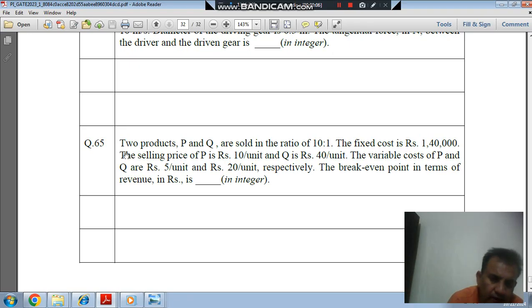Hello, welcome again. We are solving GATE 2023 Production and Industrial Engineering question number 65. Two products P and Q are sold in the ratio of 10:1. The fixed cost is Rs. 1,40,000. The selling price of P is Rs. 10 per unit and Q is Rs. 40 per unit. The variable cost of P and Q are Rs. 5 per unit and Rs. 20 per unit respectively. The break-even point in terms of revenue is rupees dash in integer.